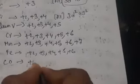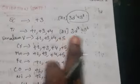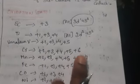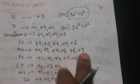Cobalt is having plus 2, plus 3, plus 4. Nickel is having plus 2, plus 3, plus 4. Copper is having plus 1, plus 2. Zinc is having plus 2. So here, according to electronic configuration, the oxidation states go 2, 3, 4, 5 and then 2, 3, 4, 5, 6, 2, 3, 4, 5, 6, 7.